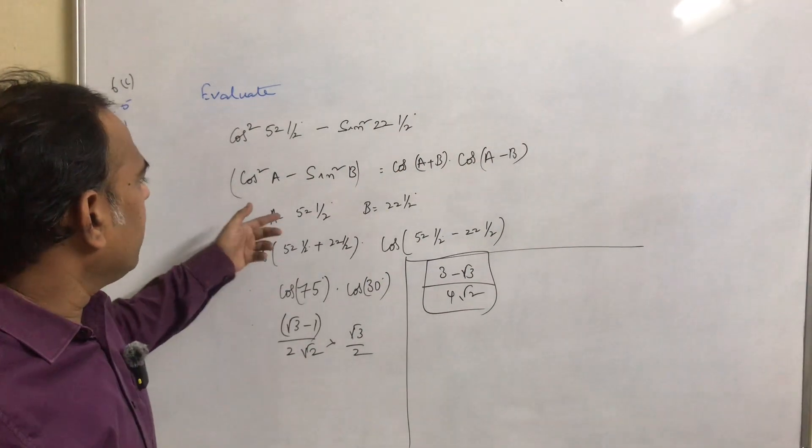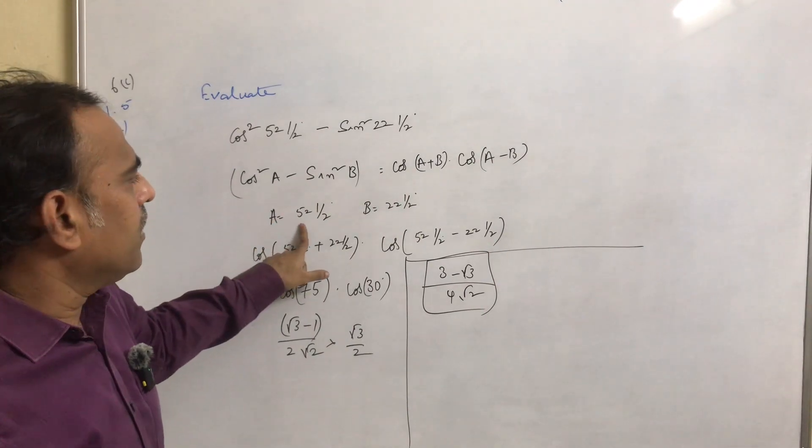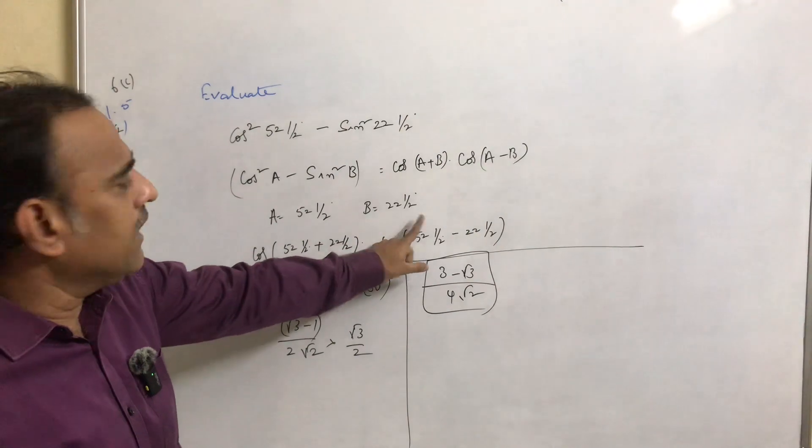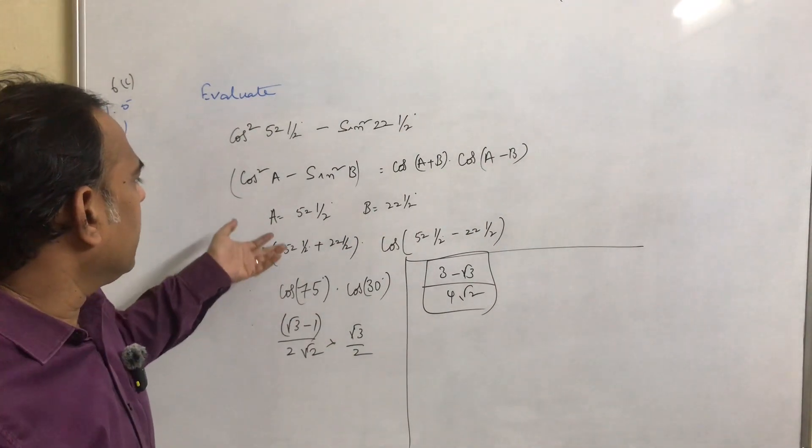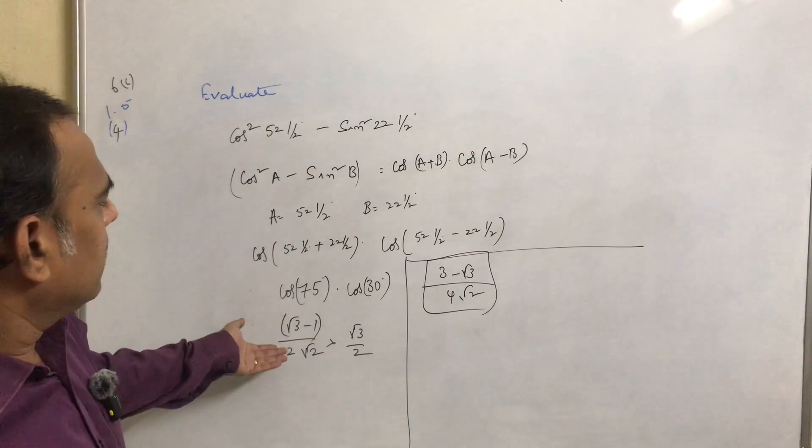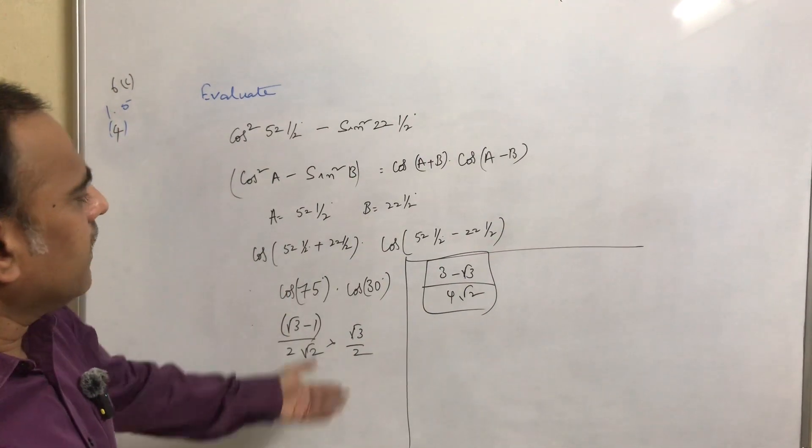And we have a - for a we have 52½° and b, 22½°. Just substitute the a value and b value and we will simplify the problem. We will get the result.